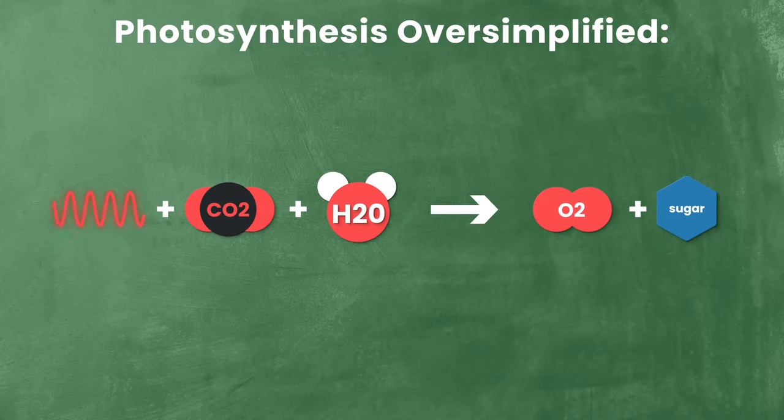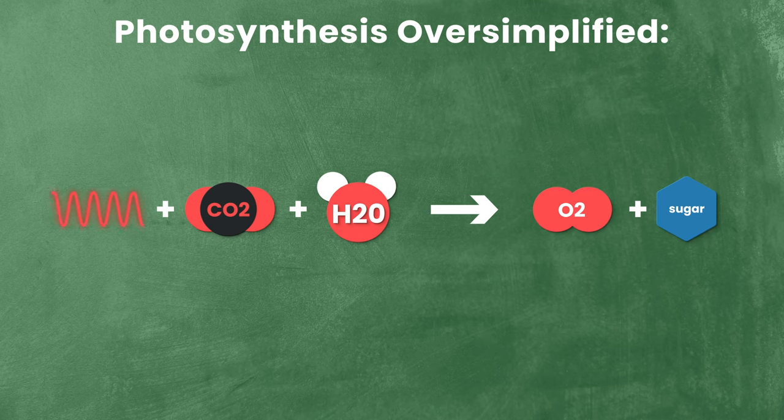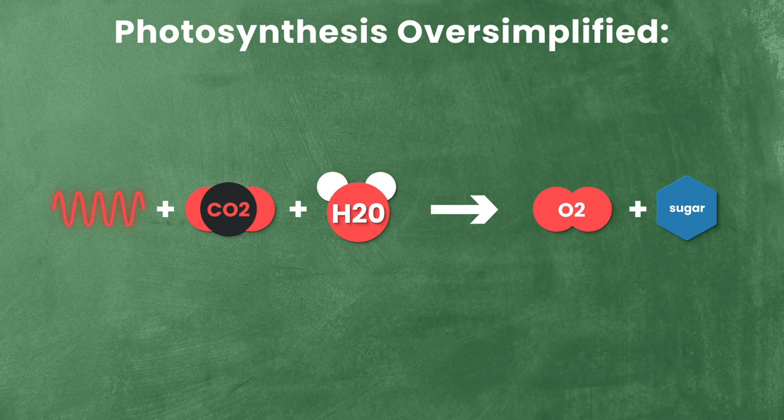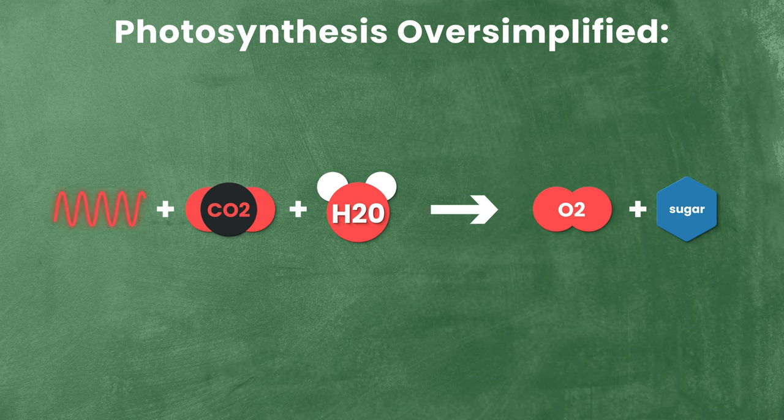The process by which plants turn sunlight into food is photosynthesis. And it is miraculous. We're taking a deep dive across probably half a dozen videos where we uncover the mechanics of how plants turn water and carbon dioxide into oxygen and sugar using nothing but sunshine.